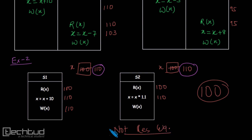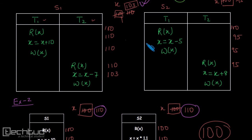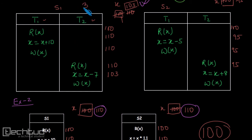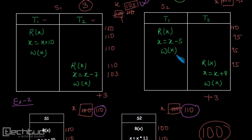Going back to the previous example: notice that in schedule S1, transaction T1 increases X by 10 and T2 decreases by 7 — a net increase of 3. In schedule S2, it first decreases by 5 and then increases by 8 — again a net increase of 3. Both schedules are trying to increase the value of X by 3, so for any value of the variable, the result will be the same. Therefore, those two schedules are result equivalent.